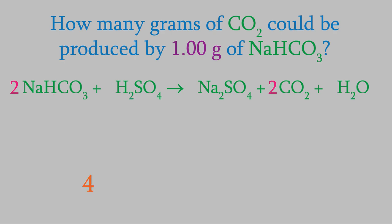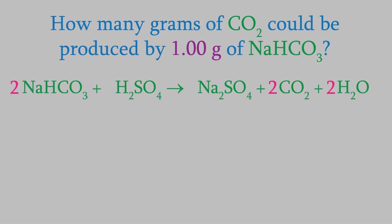There are four hydrogens on the left — one for each sodium bicarbonate molecule, and two in the sulfuric acid — and there are two on the right side of the equation. So we need to put a two in front of the water. Now that we've done that, we find that everything's balanced. There are two sodiums on each side of the reaction, four hydrogens, two carbons, ten oxygens, and one sulfur. Now we can finally start our calculation.